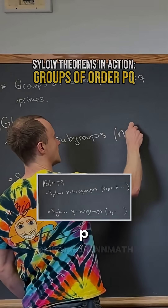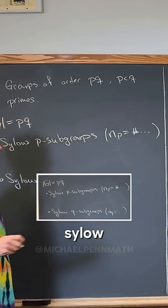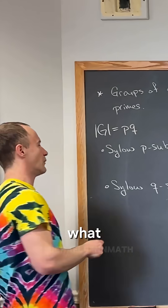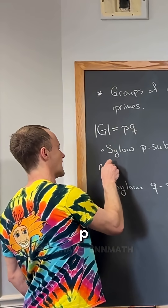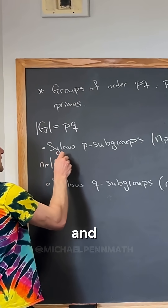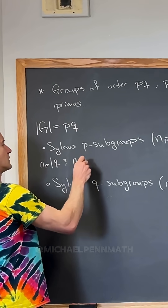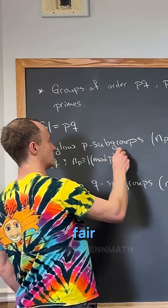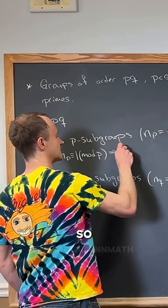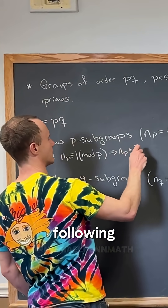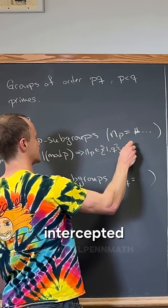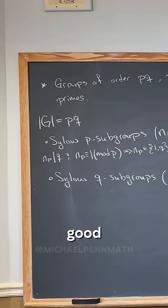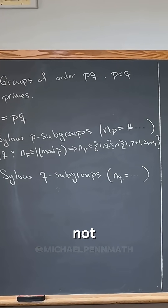Let n_p be the number of Sylow p-subgroups and n_q be the number of Sylow q-subgroups. Now, n_p must divide q, and n_p must be congruent to 1 mod p. This means n_p comes from the set {1, q} intersected with {1, p+1, 2p+1, ...}.